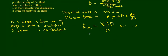Reynolds number is a ratio of inertial forces to viscous forces. In the equation, density ρ is related to mass, which is connected to inertial forces, and viscosity μ is connected to viscous forces. That is how Reynolds number also turns out to be the ratio of inertial to viscous forces.